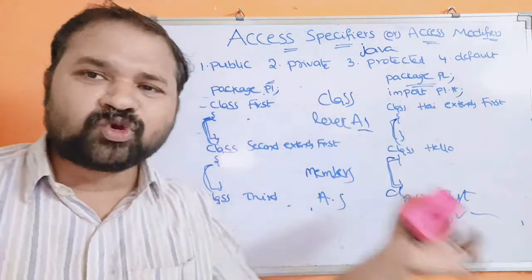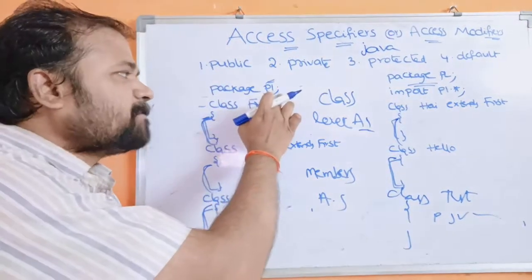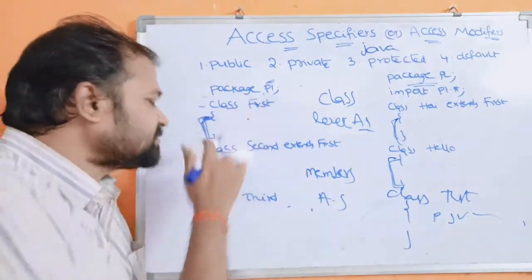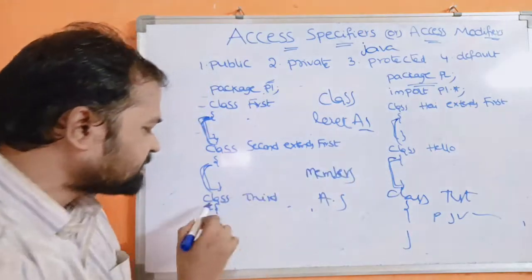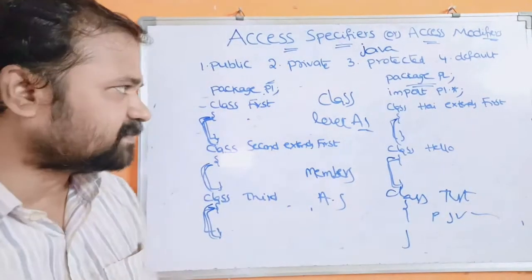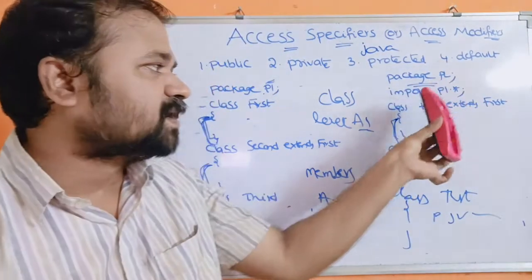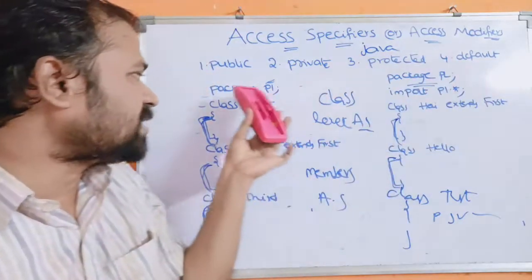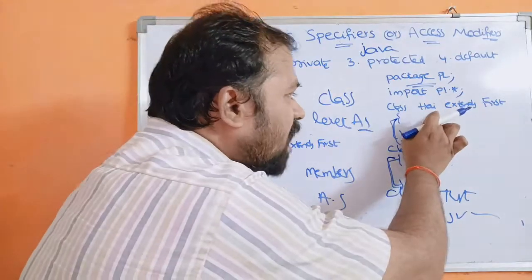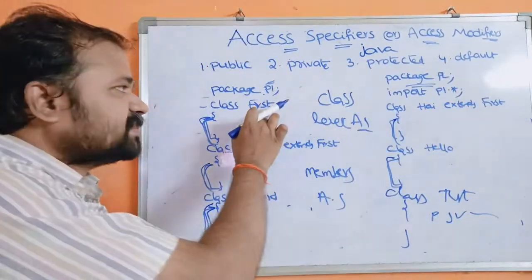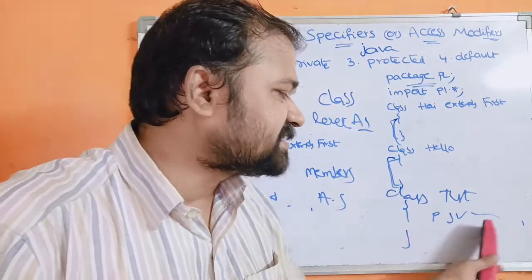Here we have two programs. The first program's package name is p1. It has a class called 'first', a class called 'second' which extends from 'first', and a 'third' class. The second program's package name is p2. It imports p1 using 'import p1.*'. It has a class called 'i' which extends from the 'first' class of p1, a 'hello' class, and a 'test' class which contains the main method.